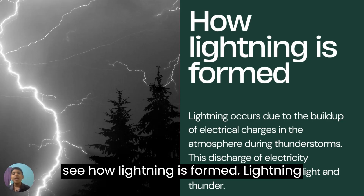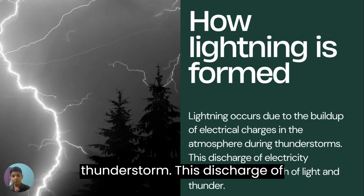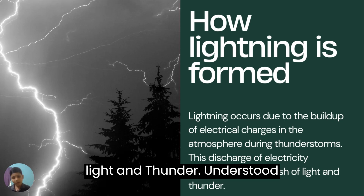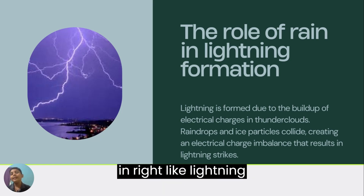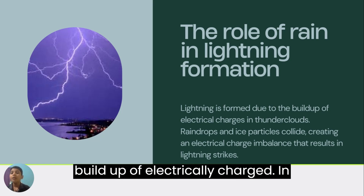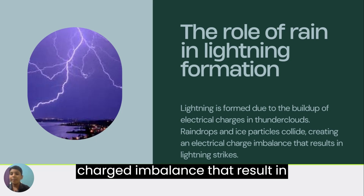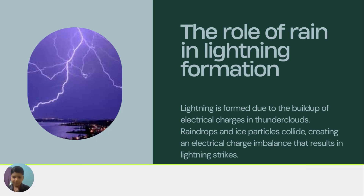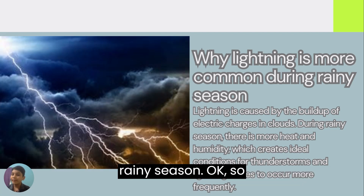Lightning occurs due to the build-up of electrically charged particles in the atmosphere during a thunderstorm. This discharge of electricity produces a bright flash of light and thunder. Now, what is the role of rain in lightning formation? Lightning is formed due to the build-up of electric charges in thunderclouds — raindrops and particles collide, creating an electrical charge imbalance that results in a lightning strike.